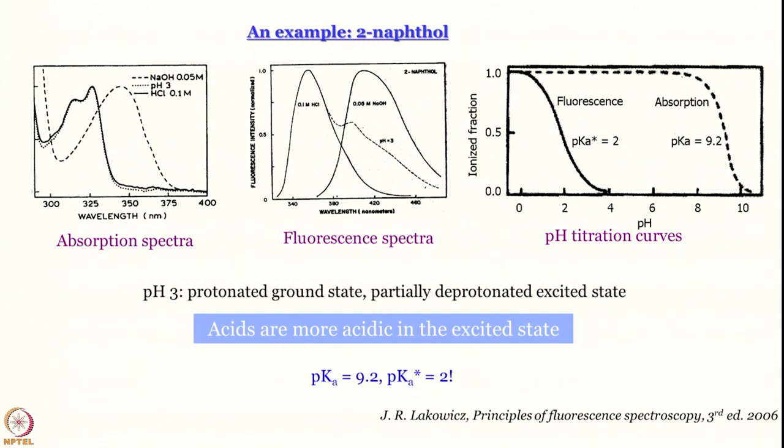That is how profound the effect of photoacidity can actually be — it is not a trivial phenomenon. In fact, it is utilized in many processes to bring about a pH jump. It has been utilized in experiments described in papers published in Science in 2003 and 2006 by the group of Professor Nibbering from Berlin, where they established the mechanism of acid-base reactions — a mechanism that has now been elucidated by using a photo acid and ultrafast lasers.